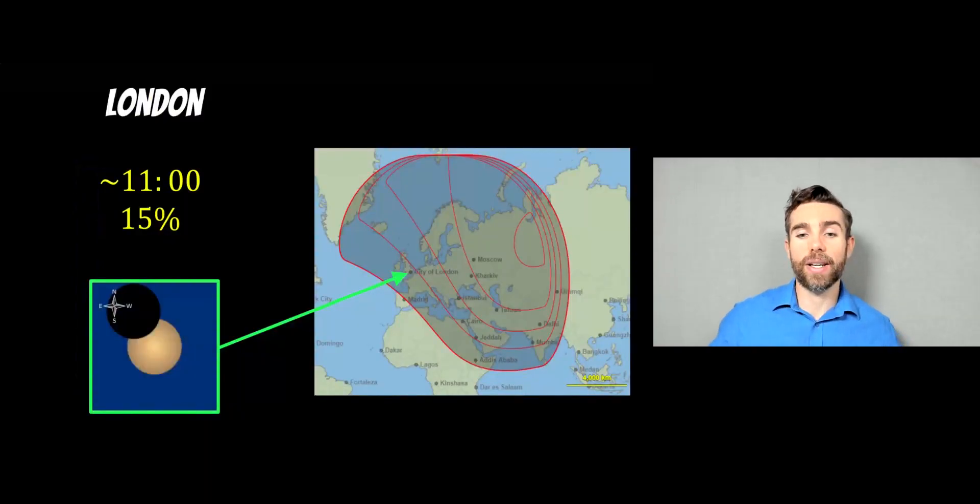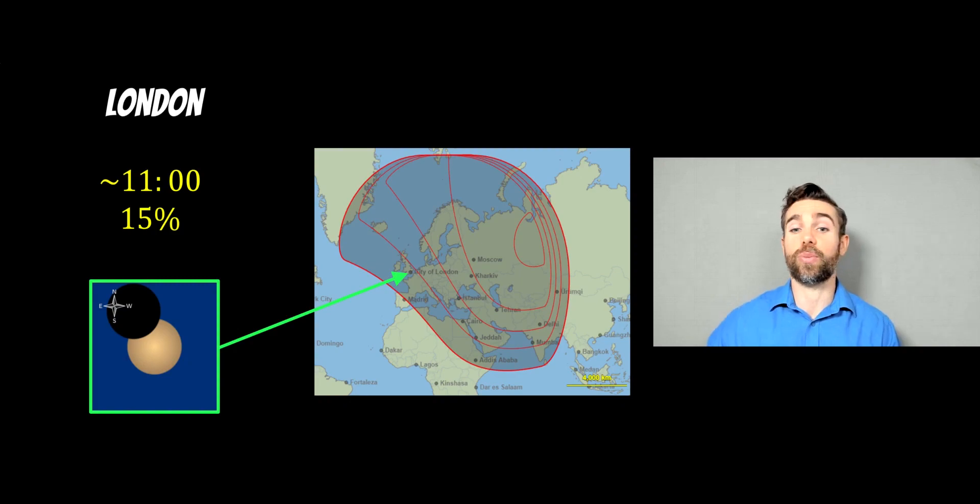If you are in London or the UK, which is where I am, then you're not going to see much of the sun be obstructed by the moon. In London, it's going to be about 15 percent and that'll occur around 11 o'clock in the morning, which is the local time. The times I'll give for other places will be in their local time anyway.